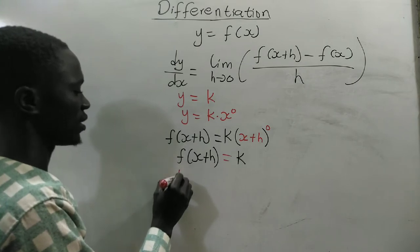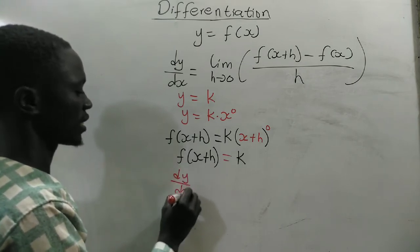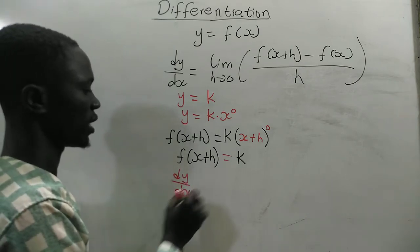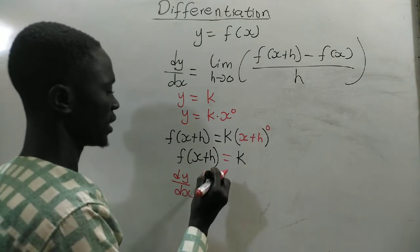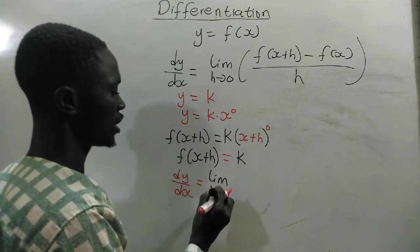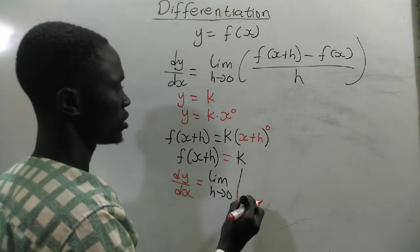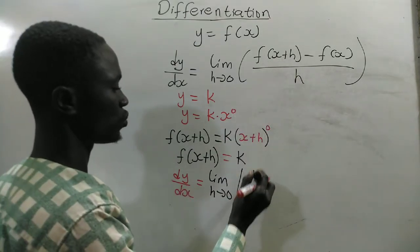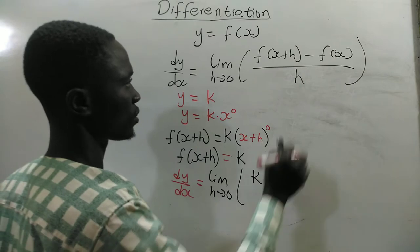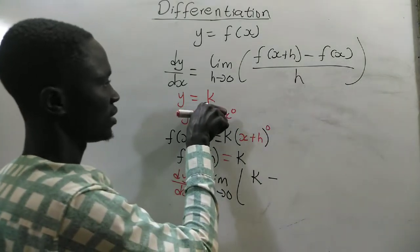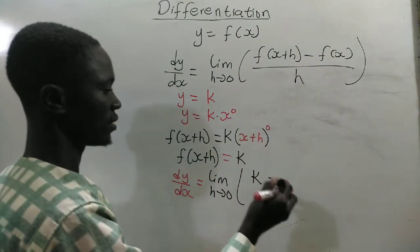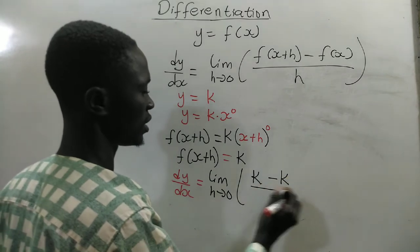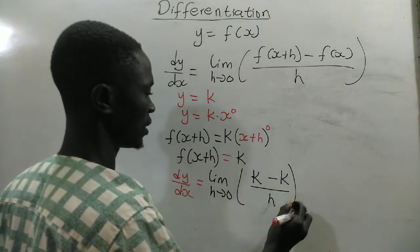So now, we are going to have dy/dx, the derivative of y with respect to x is equal to the limit as h approaches 0, f of x plus h equal to k, minus f of x is also equal to k, divided by h.